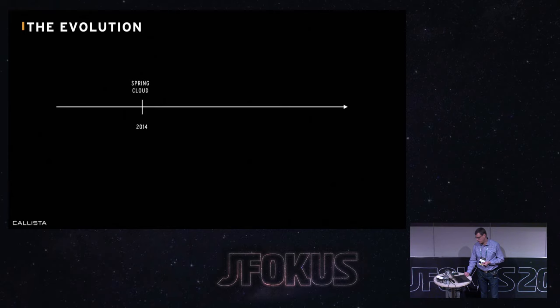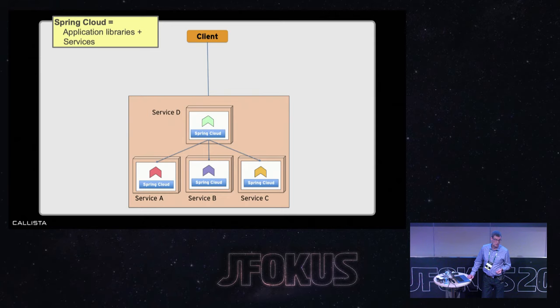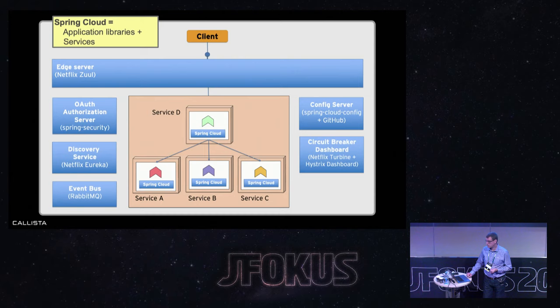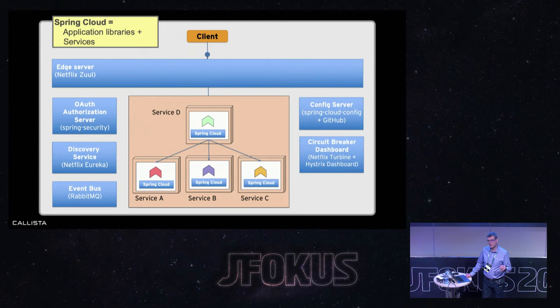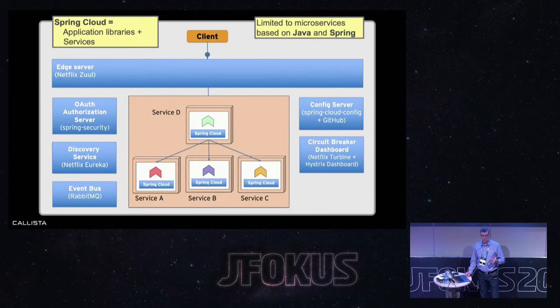The first tool I learned about was Spring Cloud when it was released back in 2014. Spring Cloud comes with a number of application libraries that you build into your microservices. You then start a number of Spring Cloud specific services in your system landscape, and the application libraries communicate with those services to provide capabilities for edge server, discovery, configuration, and resilience mechanisms such as a circuit breaker. This was totally revolutionary when it came out in 2014. But we have to remember it is a bit restricted — it's mainly designed for microservices based on Java that already use the Spring framework.